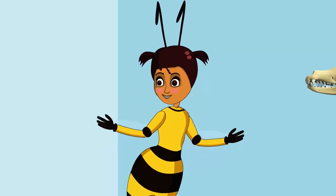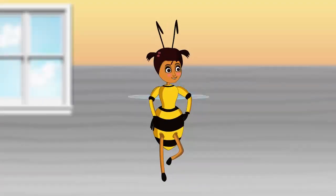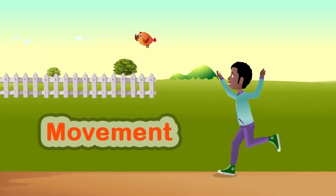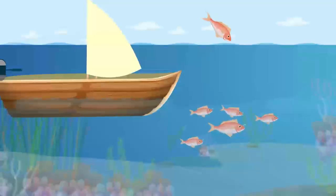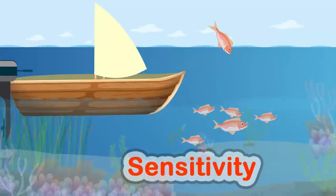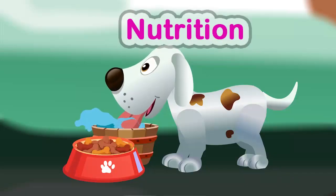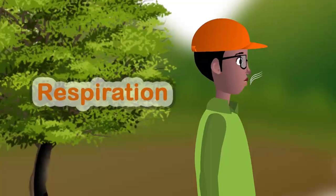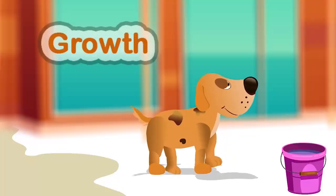The life processes of living things include movement, reproduction, sensitivity, nutrition, excretion, respiration, and growth.